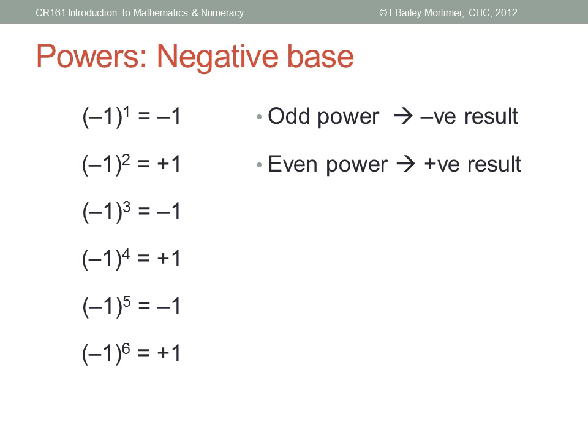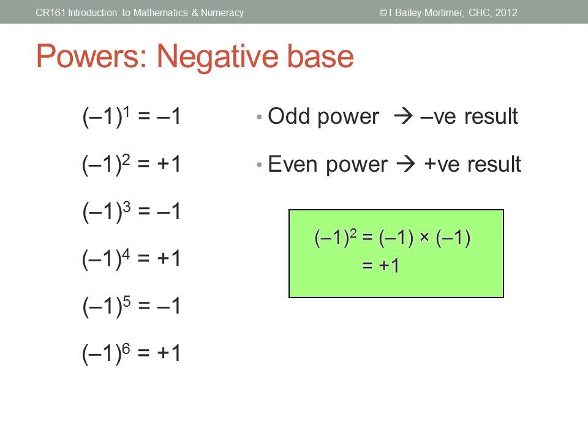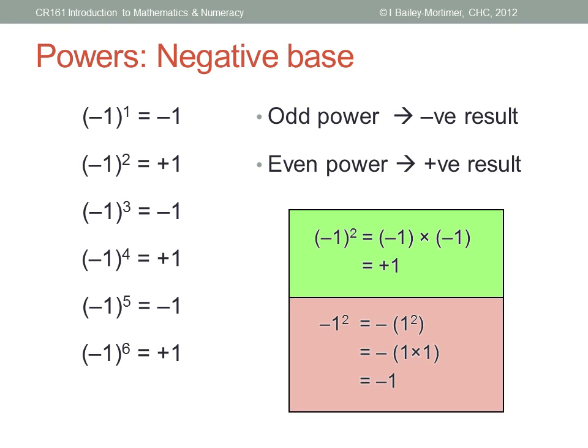Notice how brackets are placed around the negative base in all these examples — that means the power applies to the whole base, including the negative sign. Negative one in brackets squared means negative one times negative one, which is positive one. Without the brackets, the rules of arithmetic say the power happens first, so it means the negative of one squared — negative one times one — which is negative one. Be careful with your language and when typing into your calculator, which will assume the no-brackets interpretation.